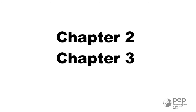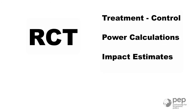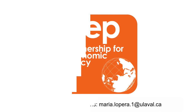The second and the third chapter are an example of a randomized control trial. They illustrate how to create a treatment and a control group, how to do basic power calculations, and how to obtain a simple program impact estimate using Stata.